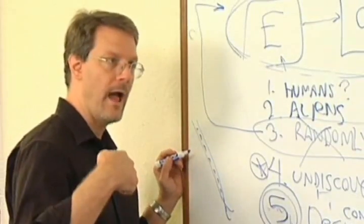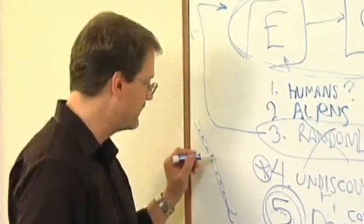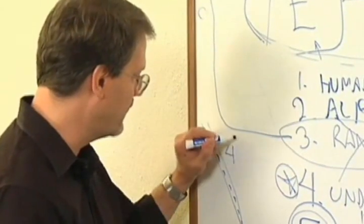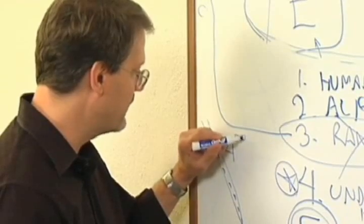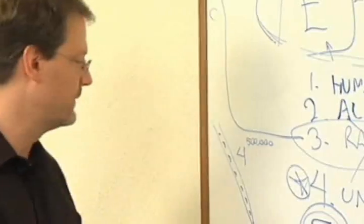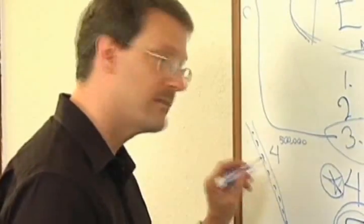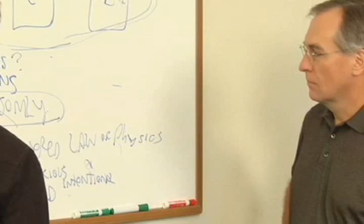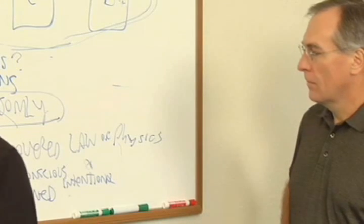So how many combinations of those letters are possible? Well, the math for that is 4 to the power of 500,000. Well, do you know what 4 to the power of 500,000 is? It's something like 10 to the power of 200,000.